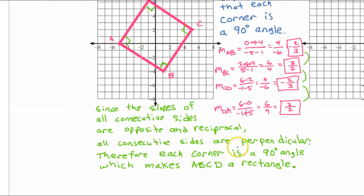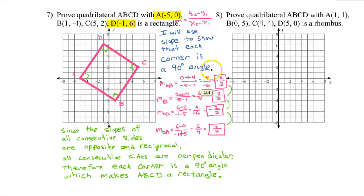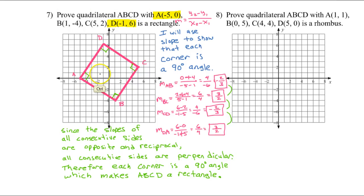Zooming out to get the big picture — this is what a proof should look like. It has three parts. You start by saying what your strategy is: I will use slope to show that each corner is a 90-degree angle. Then you go ahead and do that — show your calculations. Then finish with a summary statement that ties it all together and proves whatever you were trying to prove.